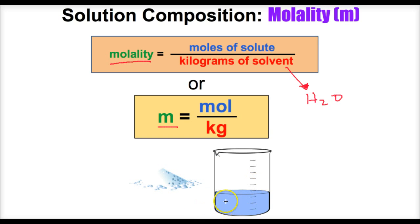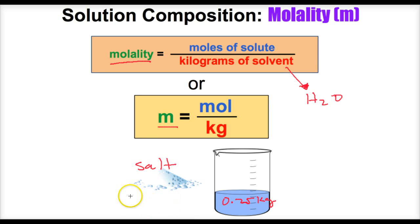Let's suppose I have a beaker of water here and this beaker of water has 0.25 kilograms in it. So we have a mass of solvent equal to 0.25 kilograms, and what we're going to do is take some salt and dissolve it — specifically 0.15 moles of salt — stir it up, and determine what the molality of this solution will be.